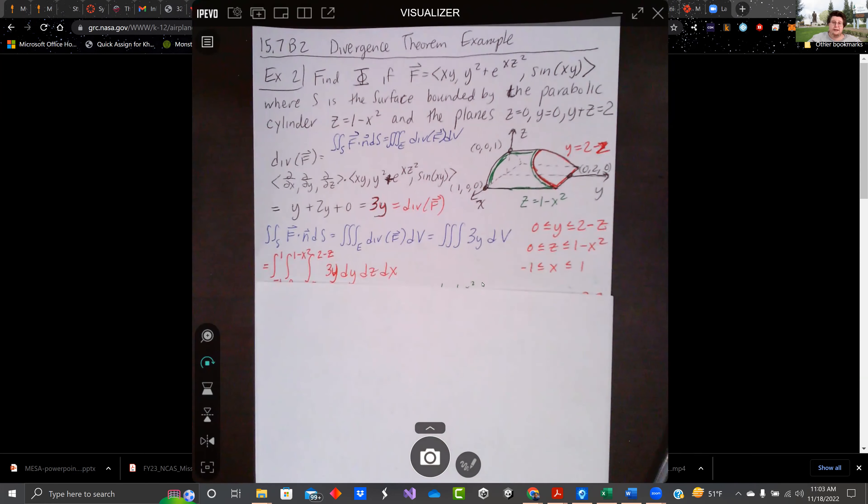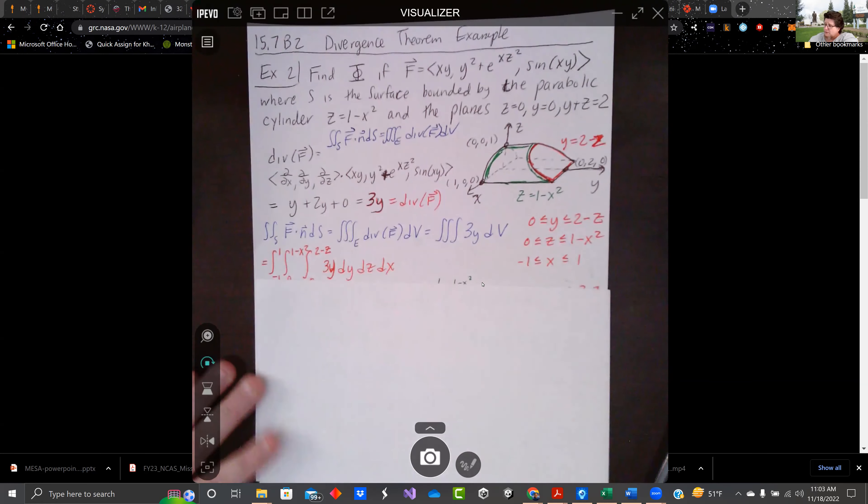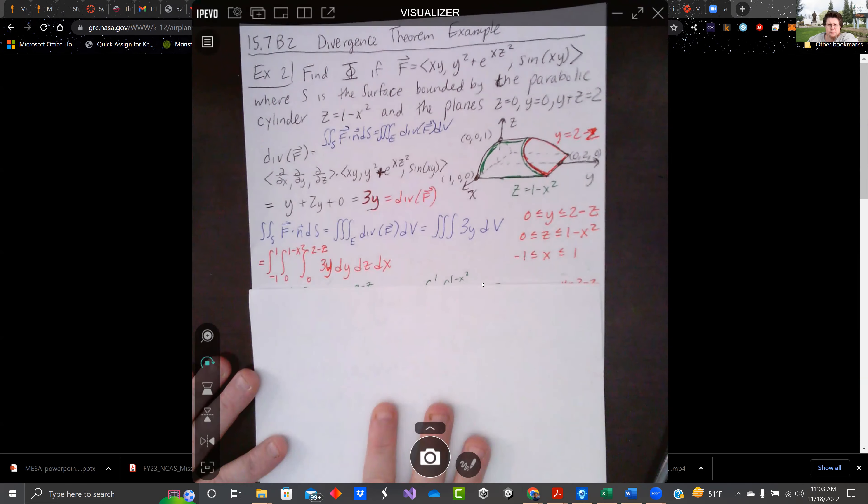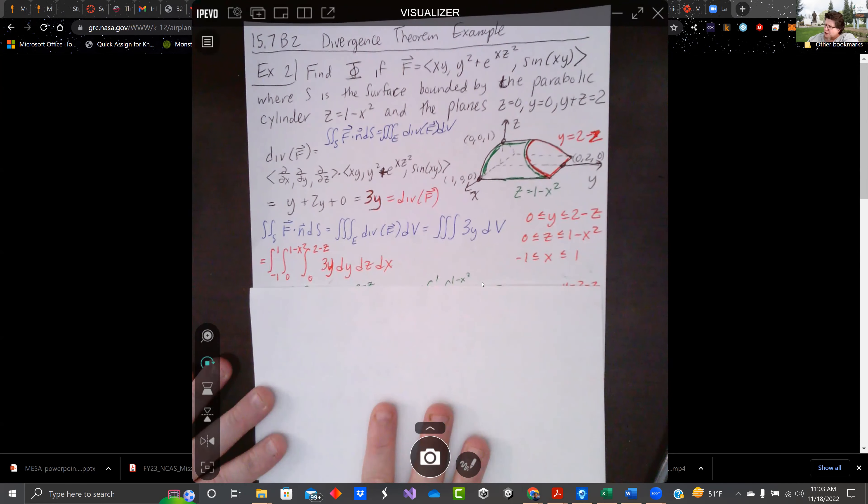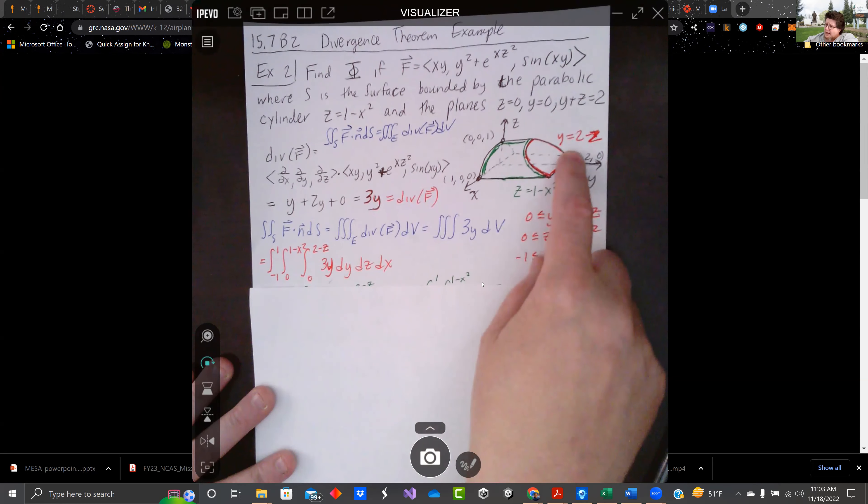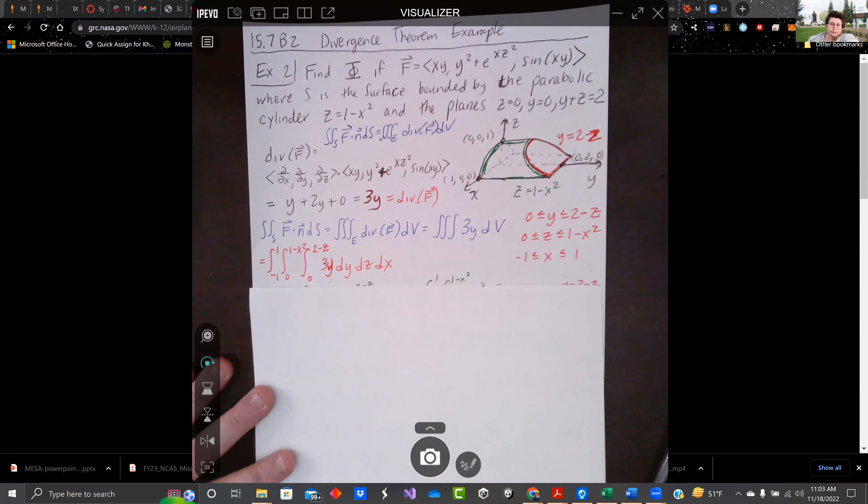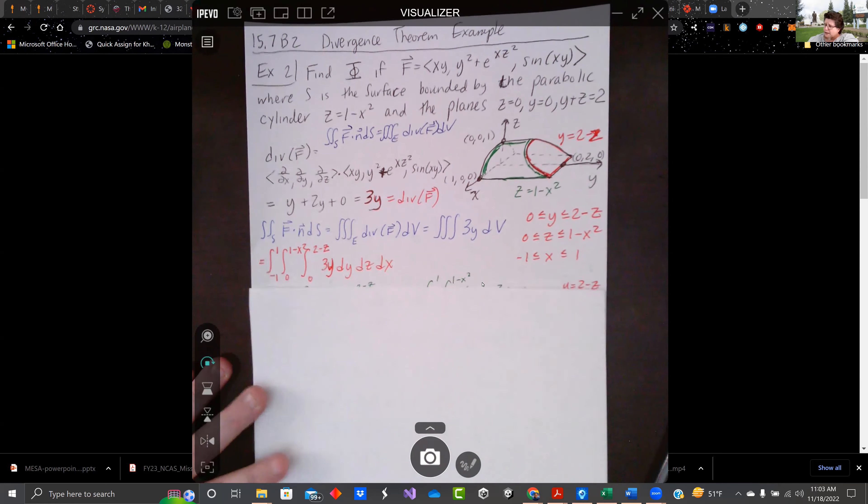So f dot n ds as our triple integral, the divergence of f, is really just the triple integral of 3y dv. We have our boundaries over here. So that sets up that integral. That's the hardest part of this problem. Draw your picture, figure out your boundary conditions. The divergence part was actually pretty easy. It's the setting up and doing the pictures and figuring out what your boundaries are.